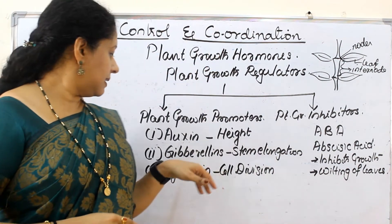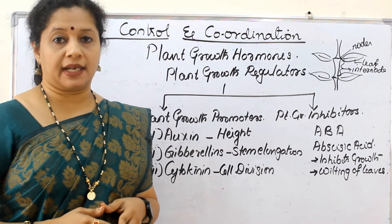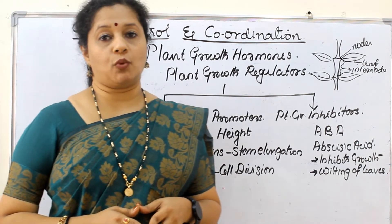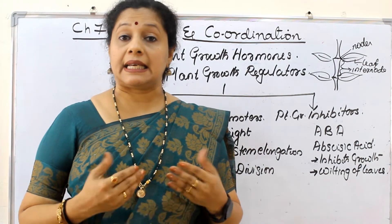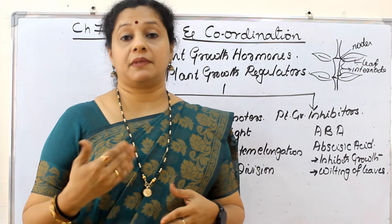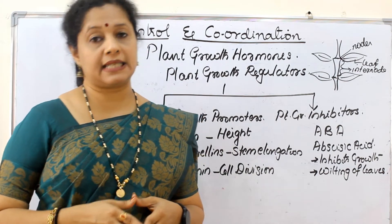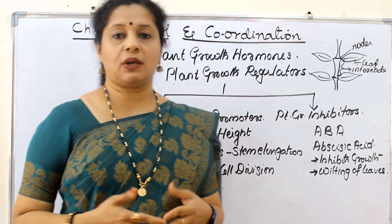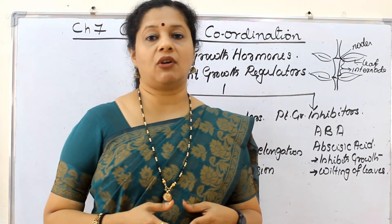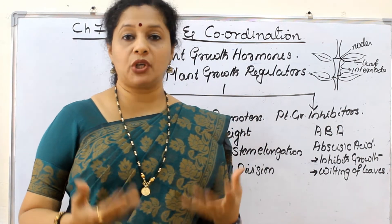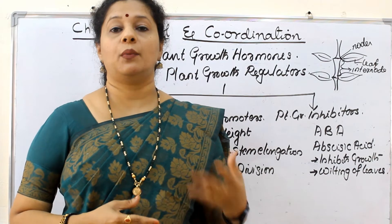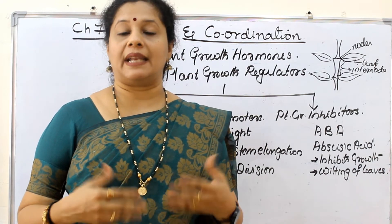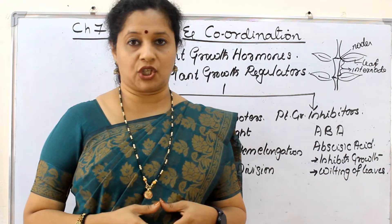The third hormone is cytokinin. Cytokinin is a hormone which increases the cell division rate — it helps in cell division. Usually in tissue culture experiments, when we want to produce new plants, we use cytokinin hormone to enhance cell division.